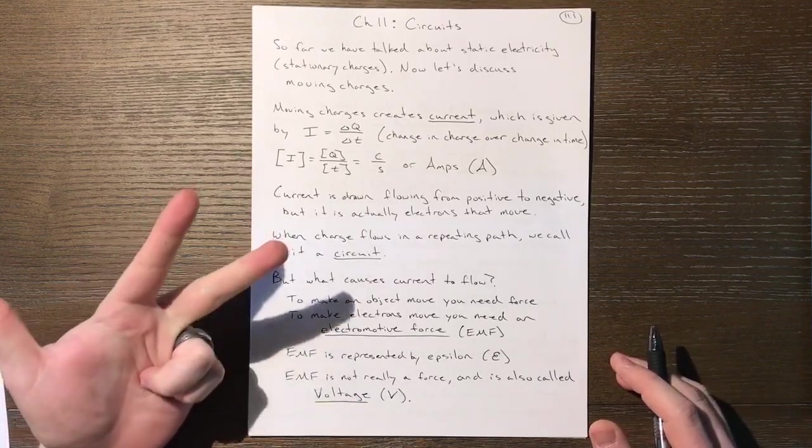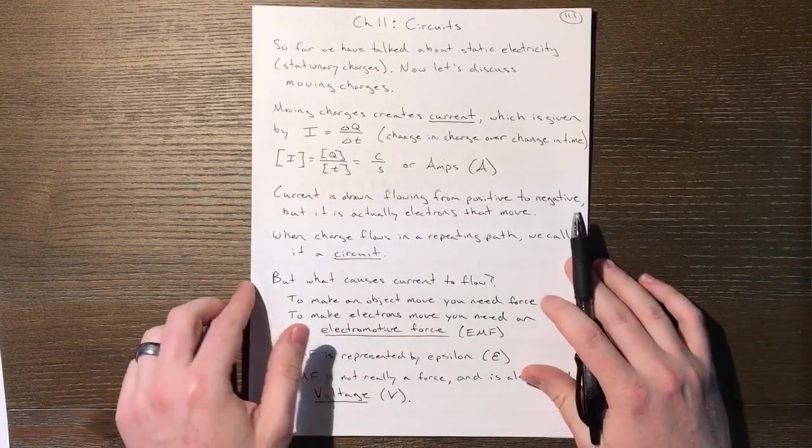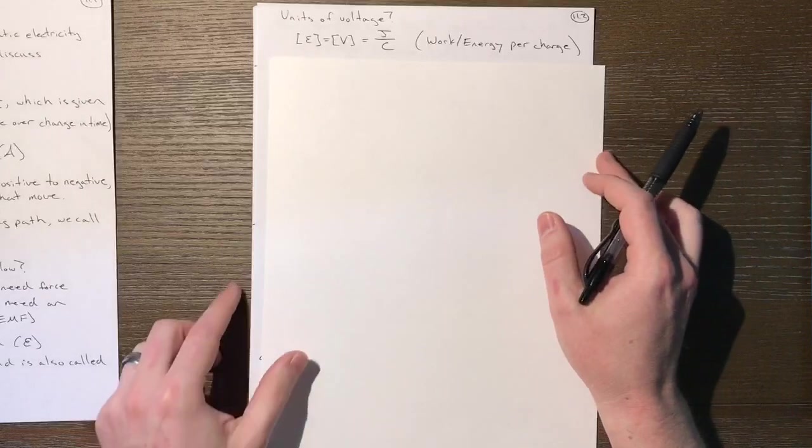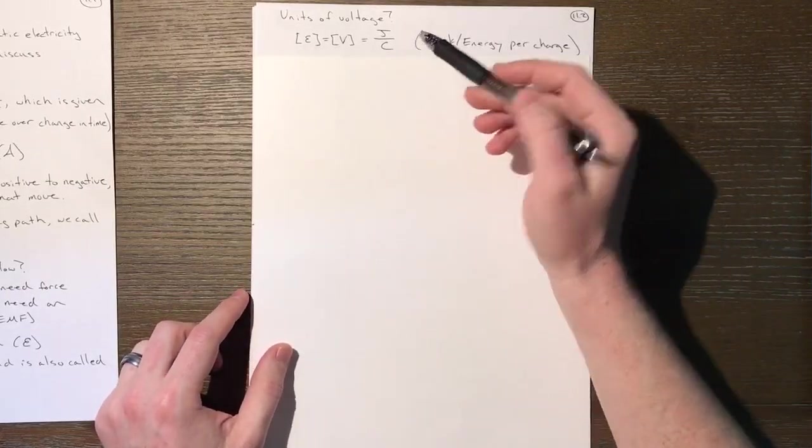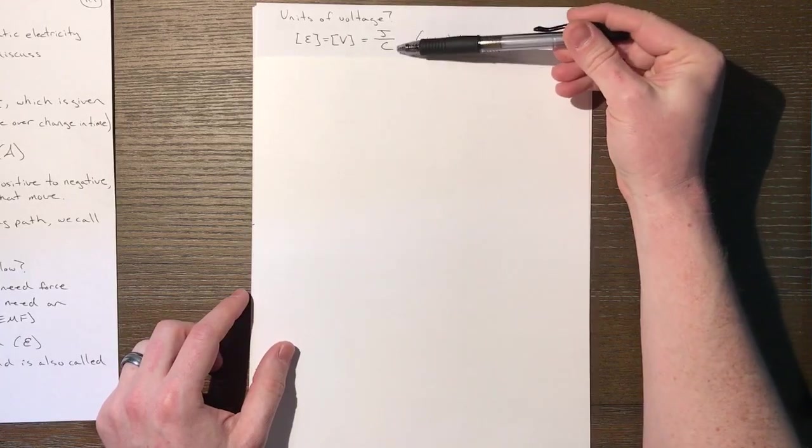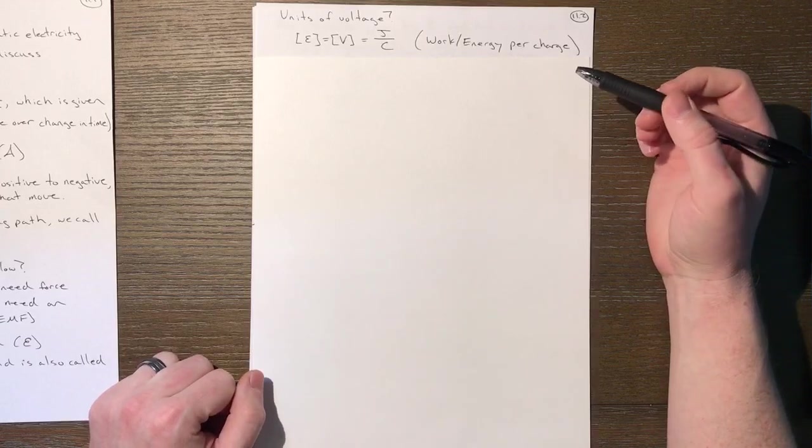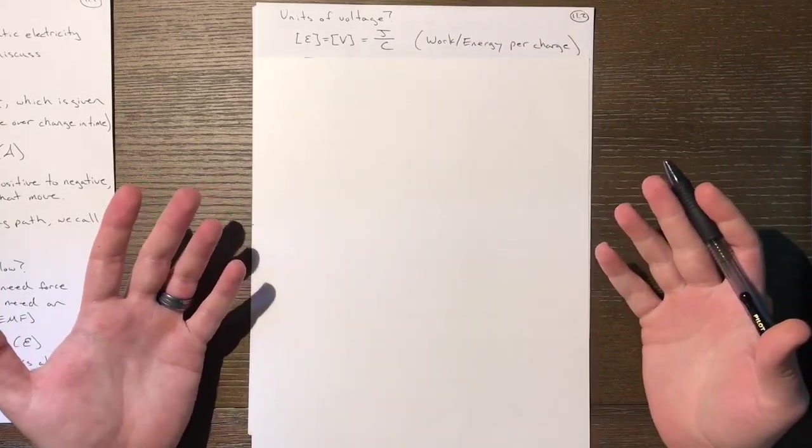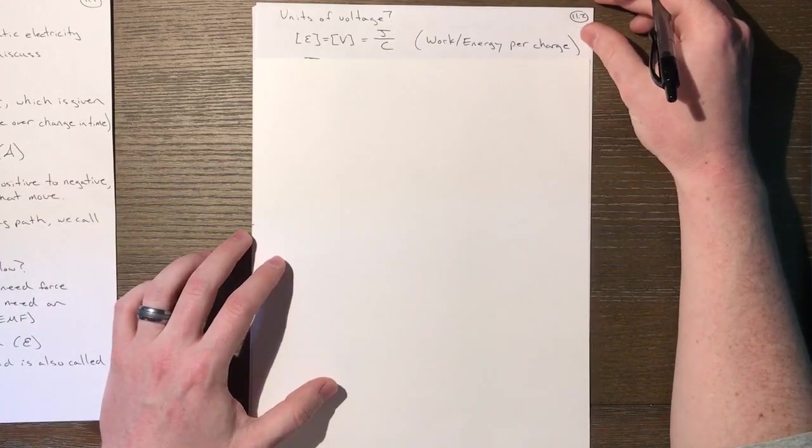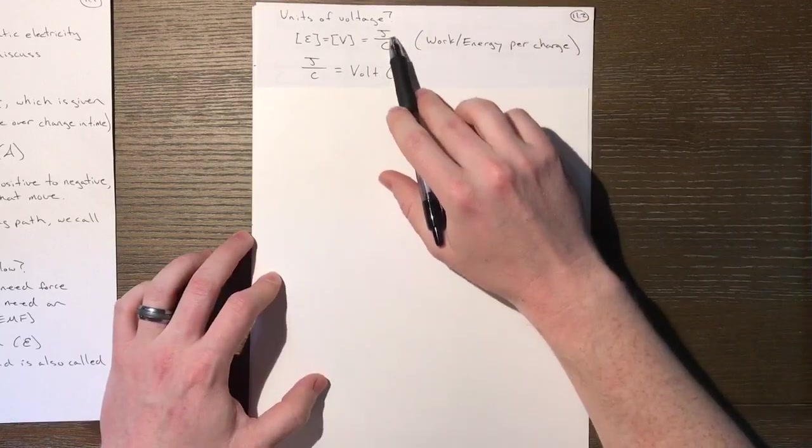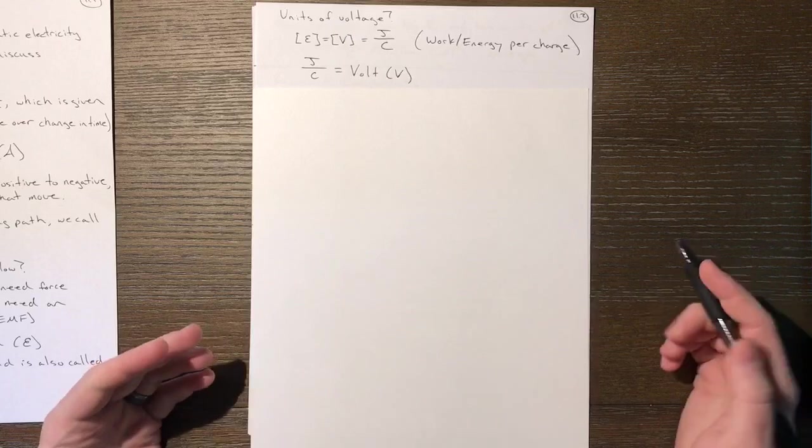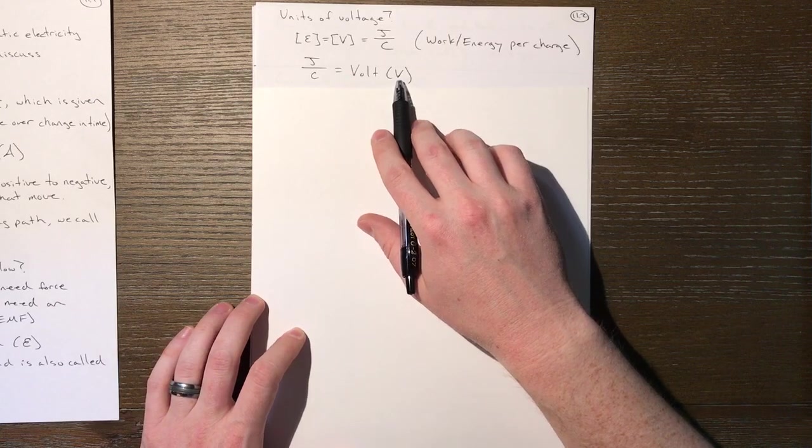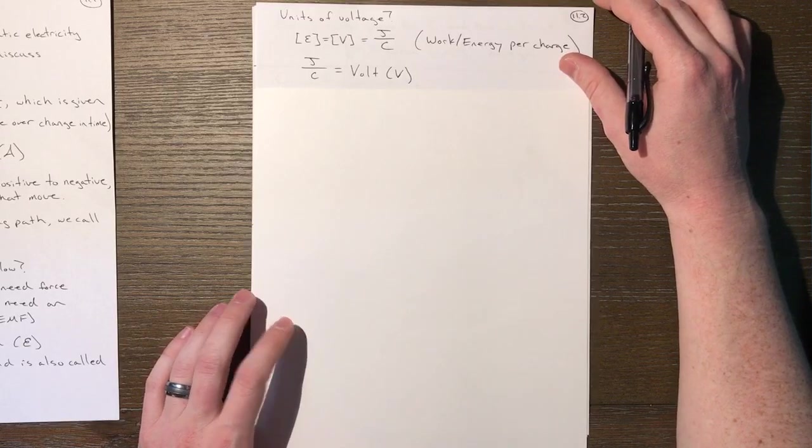Let's consider the units of voltage. They are joules per coulomb—an amount of work or energy per charge. Your voltage tells you how much energy it gives to the charges in the circuit. But joules per coulomb has another name: the volt, also abbreviated with capital V. So capital V represents voltage and volts, the unit for voltage.